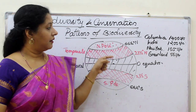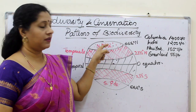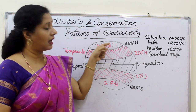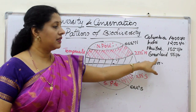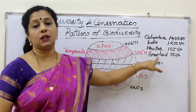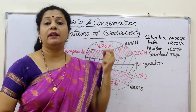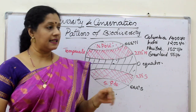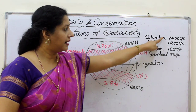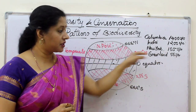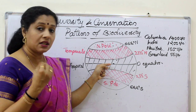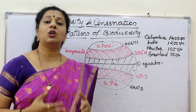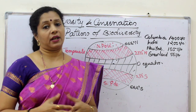Then, if you go further to Greenland, which is after the Arctic Circle at 71 degree north, it is only 56 species of birds. So, you can see that there is a drastic decrease in the number of species of birds alone as you go up. The same way, it is applicable to all organisms.